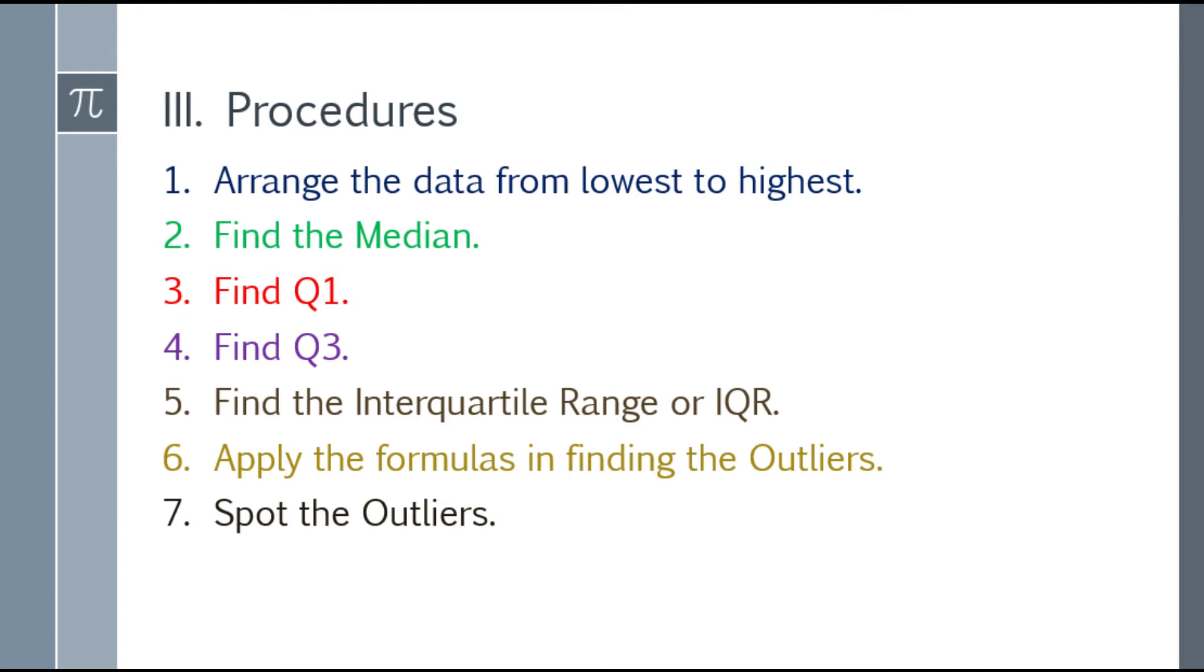Fourth one is, pinapin natin yung Q3. Panglima, find the interquartile range or IQR. Kasi pag nahanap mo na yung Q1 at Q3, madali mo nang mahanap yung IQR. Pang-anim, apply mo yung formulas in finding the outliers. And last one, you can now spot the outliers.